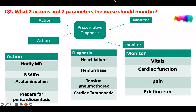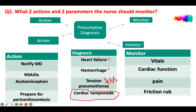Going back to the bowtie, you need to name two actions and two monitoring parameters. We have cardiac tamponade — that's a big problem. This is not heart failure, not hemorrhage, not tension pneumothorax because there's no abnormal breath sounds mentioned. Therefore it's cardiac tamponade. Why did the patient develop it? On echocardiogram there is fluid around the heart from the pericardial inflammation. Sometimes you develop too much fluid, resulting in effusion-related or constrictive pericarditis causing cardiac tamponade.